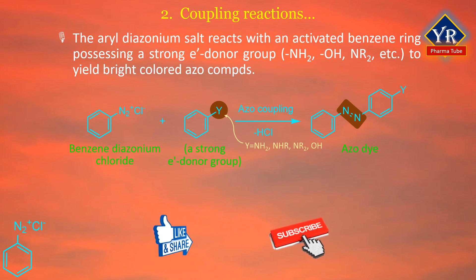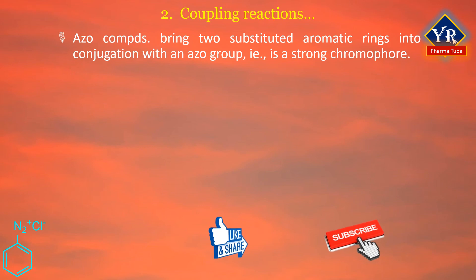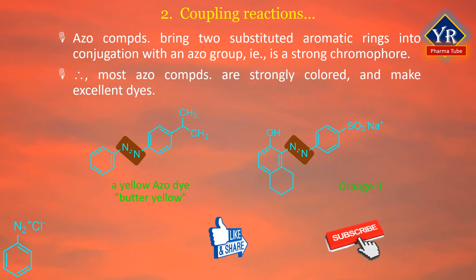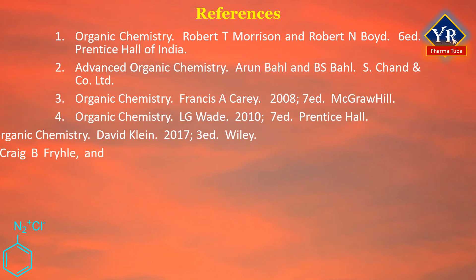Diazo coupling reactions are typical electrophilic aromatic substitutions in which the positively charged diazonium ion is the electrophile reacting with the electron-rich ring of a phenol or aryl amine. The reaction usually occurs at the para position. Azo compounds bring two substituted aromatic rings into conjugation with an azo group, which is a strong chromophore. Therefore, most azo compounds are strongly colored and make excellent dyes known as azo dyes. For example, butter yellow is a synthetic azo dye once used to color margarine. Most azo dyes are made by diazo coupling.